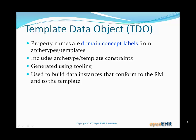In a TDO, property names are domain concept labels from archetypes and templates. All the archetype and template constraints are there. It's tool generated and used to build data instances that conform both to the reference model and to the template. One TDO equals one template — so if you have five templates you'll have five different TDOs, each a custom generation from its corresponding template.